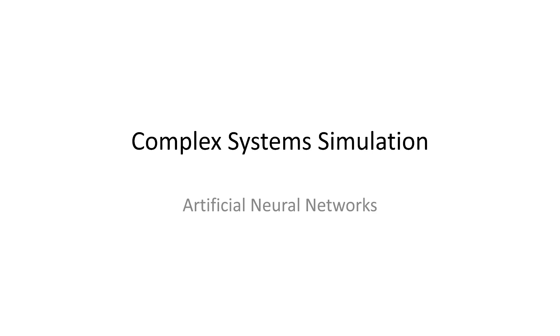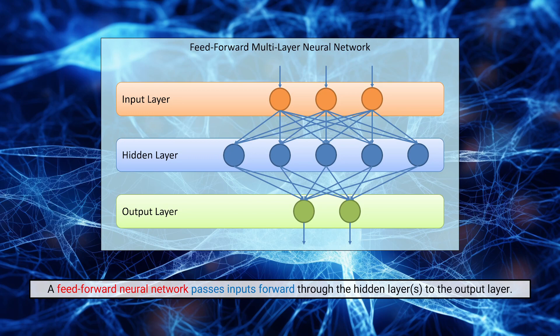In this video, I want to talk about artificial neural networks. Specifically, because there are many different kinds of artificial neural networks, I want to talk about a very common kind — maybe the kind most often referred to when we're talking about artificial neural networks — and that is the feed-forward multi-layer neural network.